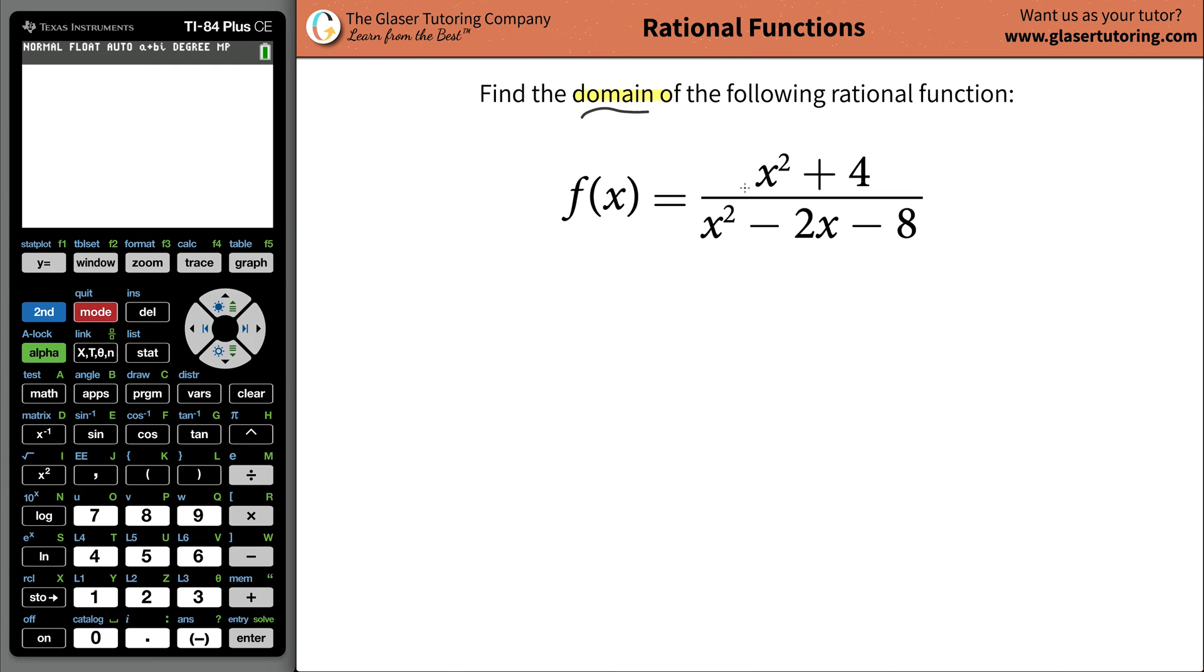You want to ask yourself a question whenever you're asked about domain. What you want to think about is, are there any values of x that's going to make this function do some wacky things? In other words, are there any values of x that I can't plug in that's going to make the function become infinite or won't make sense? Can I take the radical of a negative number? I know there's no radicals in here, but all those questions go through your mind. So I look at this in a three step process. Look at the numerator, look at the denominator, and then look at the overall function.